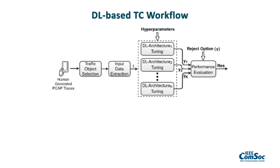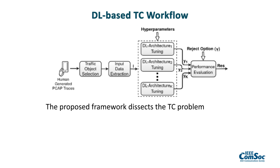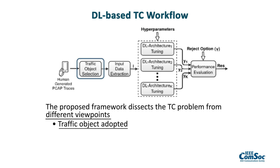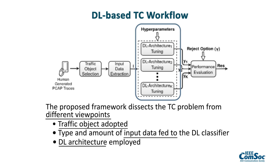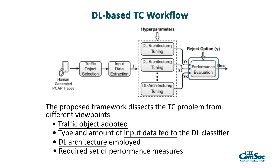Specifically, our deep learning based traffic classification workflow dissects the problem from different viewpoints. Firstly, we consider different aggregations of packets like unidirectional or bidirectional flows. Another fundamental point is the choice of the type and amount of input data fed to deep learning classifiers — in this phase, we have to avoid biased inputs that can cause inflated performance. The choice of the specific deep learning architecture is also of paramount importance. Our framework is completely agnostic with respect to the specific deep learning architecture, leveraging autoencoders, convolutional, or recurrent neural networks.